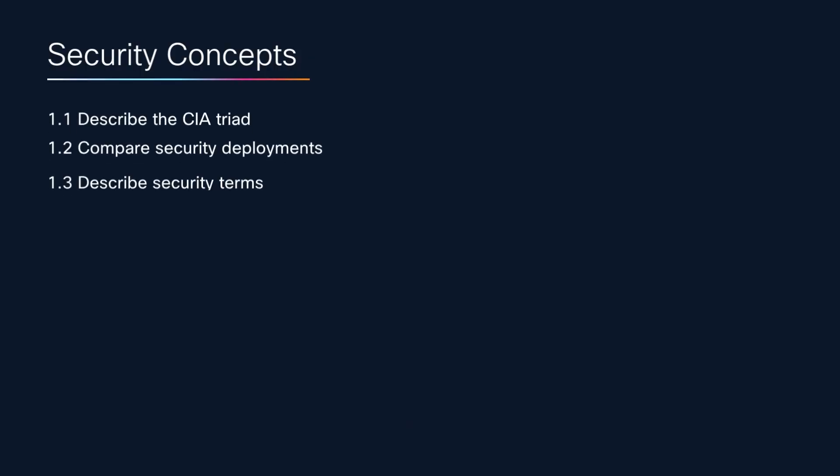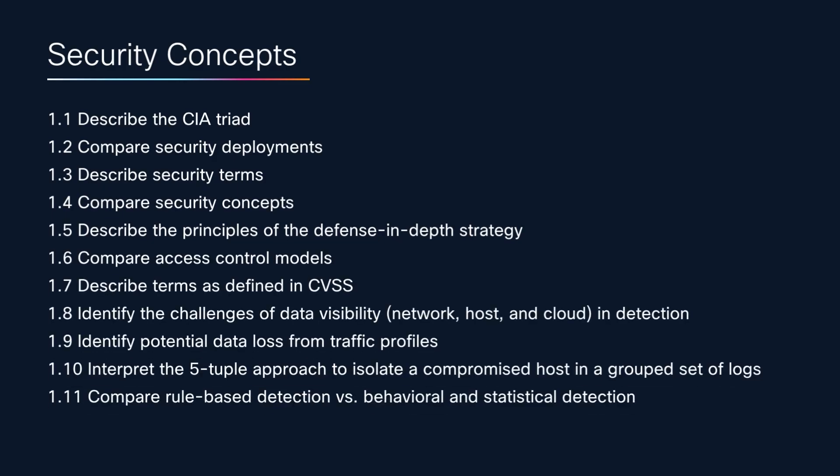We begin with the CIA triad, which stands for confidentiality, integrity, and availability. These three principles are at the heart of nearly every security decision. Confidentiality means preventing unauthorized access to data — think encryption, role-based access, or multi-factor authentication. Integrity is about making sure data remains unchanged, using tools like hashes or digital signatures. And availability is all about keeping systems running and accessible when needed. Load balancing, backup systems, and DDoS mitigation all support availability. When you look at any security tool or policy, ask yourself: what part of the triad does this protect?